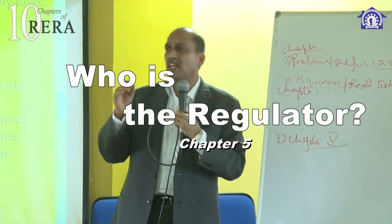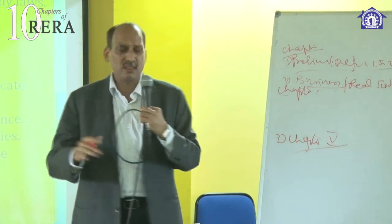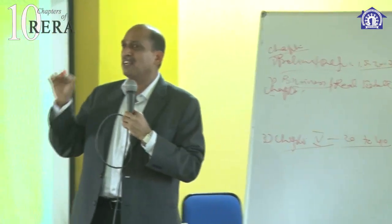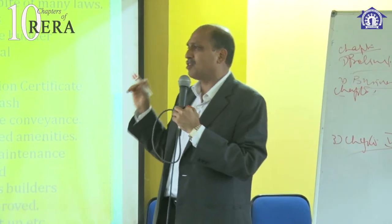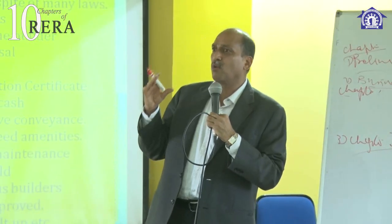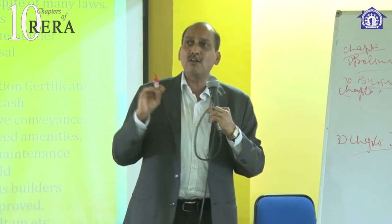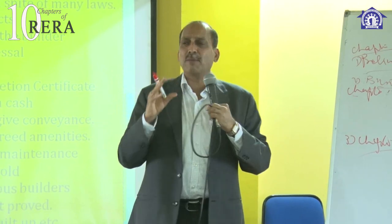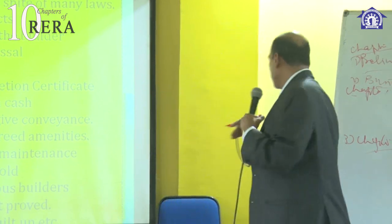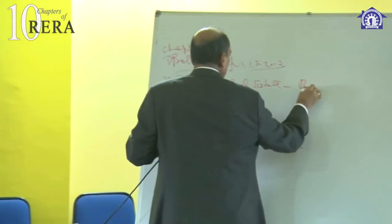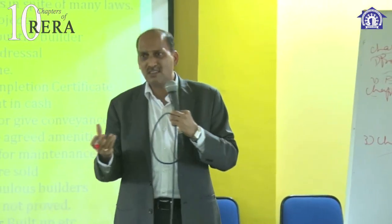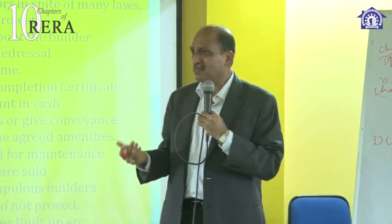Chapter number five talks about the Real Estate Regulatory Authority — who is the regulatory authority, what are the conditions. All this is given from section 20 to section 40. This authority, similar to RBI, consists of three people — one chairperson and two other members — who will regulate the real estate business. Projects must be registered with this real estate regulatory authority.